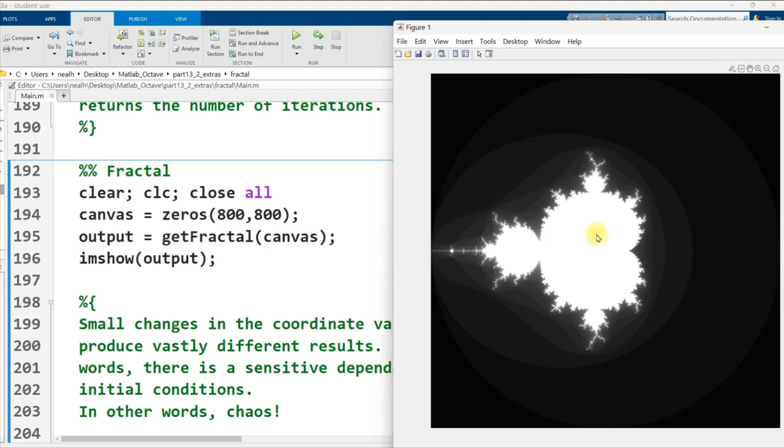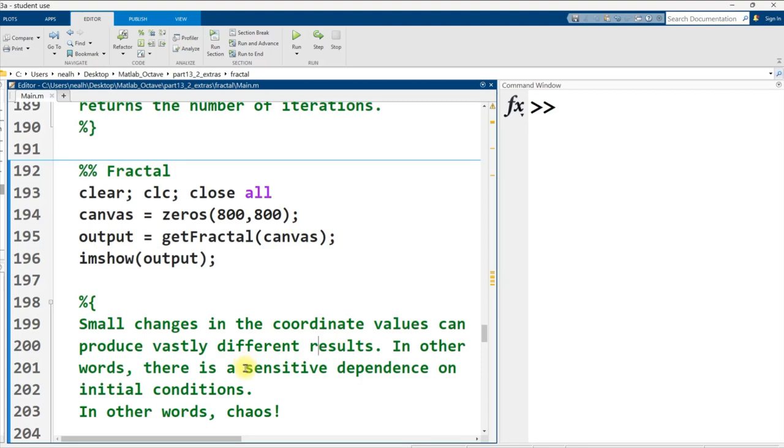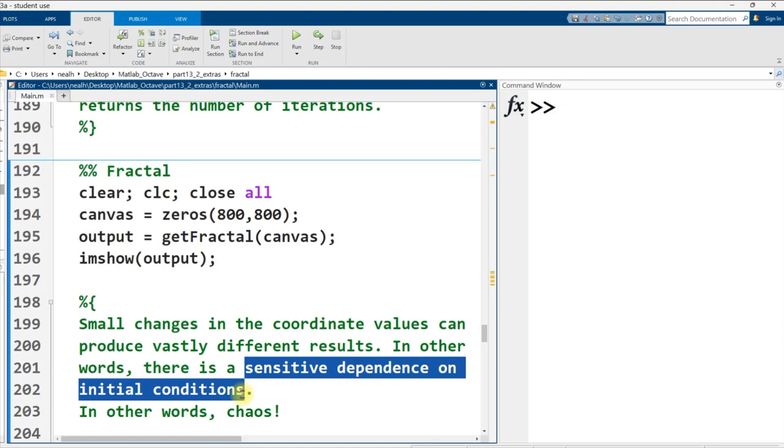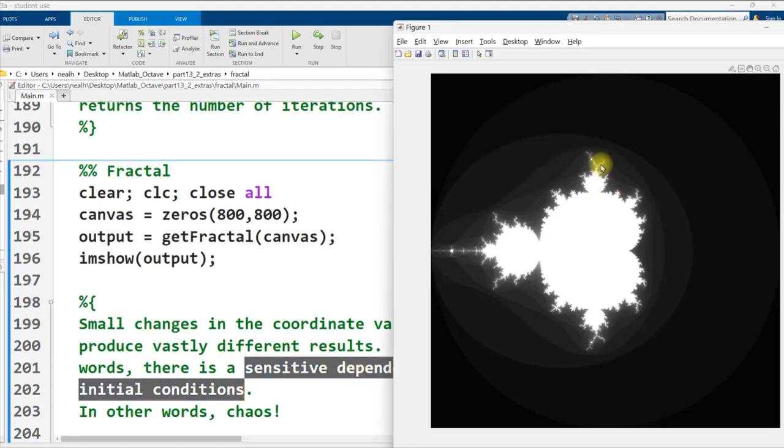So the white pixels here are values that stayed close to the origin. And the darker pixels are values that went away from the origin when we ran this algorithm. And what's so cool about this is, this is a great visual representation of chaos theory. If you've heard anything about chaos theory, you've probably heard the butterfly effect.